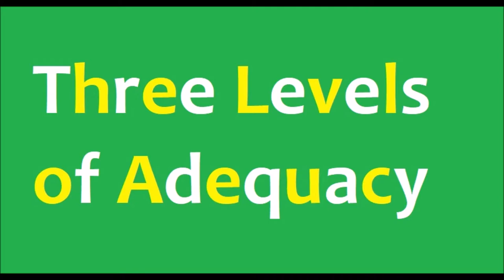A theory is said to be observationally adequate if the theory accounts only for the data. These types of theories are not much useful in describing the competence of a native speaker.